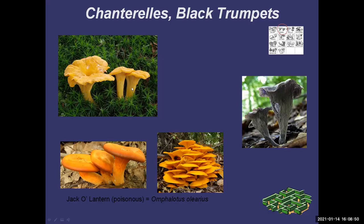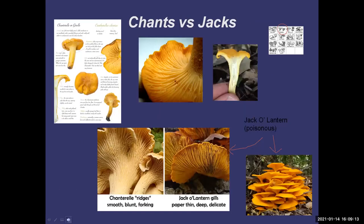Chanterelles are not quite a beginner mushroom — there is a poisonous look-alike called a jack-o'-lantern. Some ways to tell them apart: chanterelles grow from the ground, while jacks grow from trees (though they can be buried). Chanterelles are usually bright yellow; jacks are more orange. Jacks are often in clusters. Chanterelles have vein-like structures that fork and join — not really gills — and if you pull them apart like string cheese, they're white inside the stem. Jacks have true gills that are very thin, almost knife-like, and they don't join.